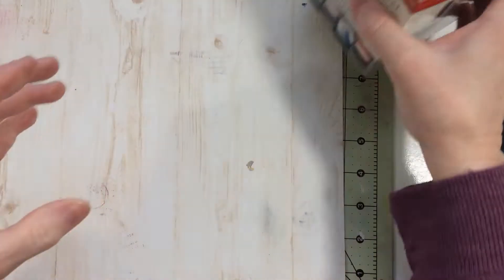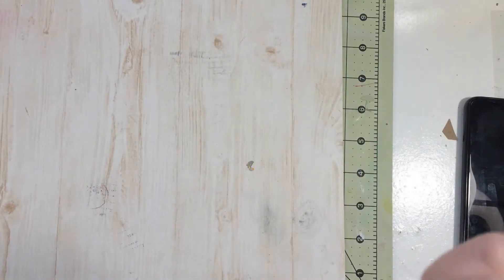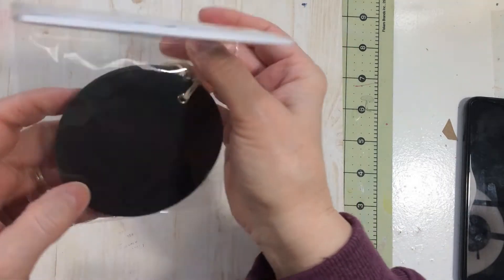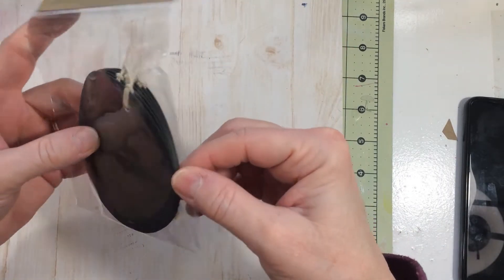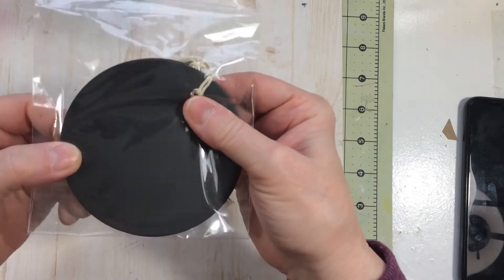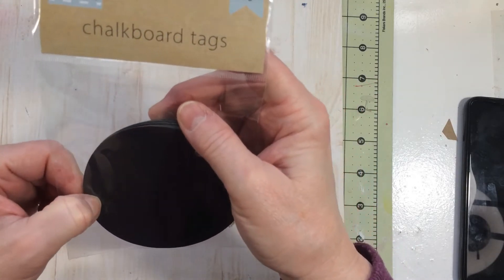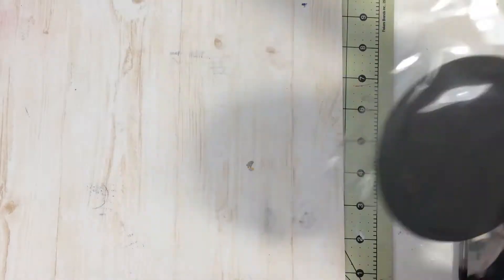The next item was I did find these chalkboard tags and these are the little chipboard kind. They're not the wooden ones, they're the thinner just like a cardboard kind of material.